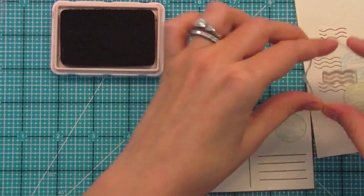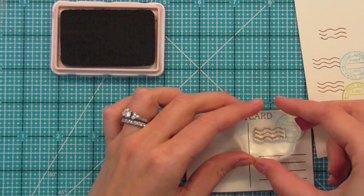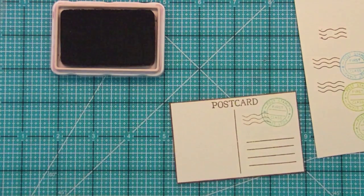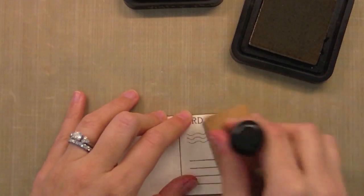For the little wavy cancel line stamps, I like to stamp it once off on some scratch paper and then stamp it again so it gets that faded post office look to it.